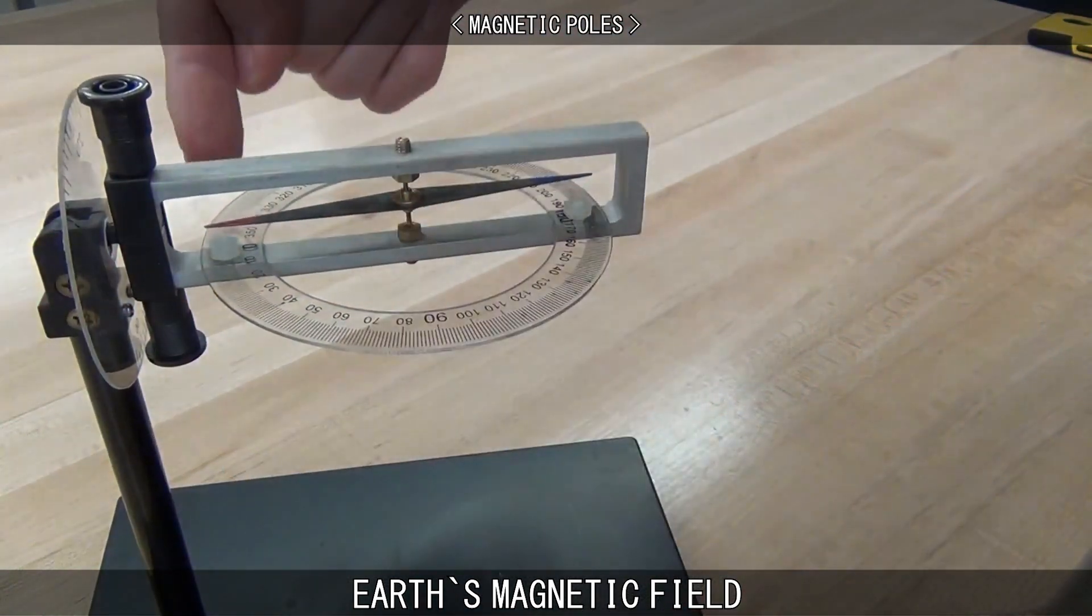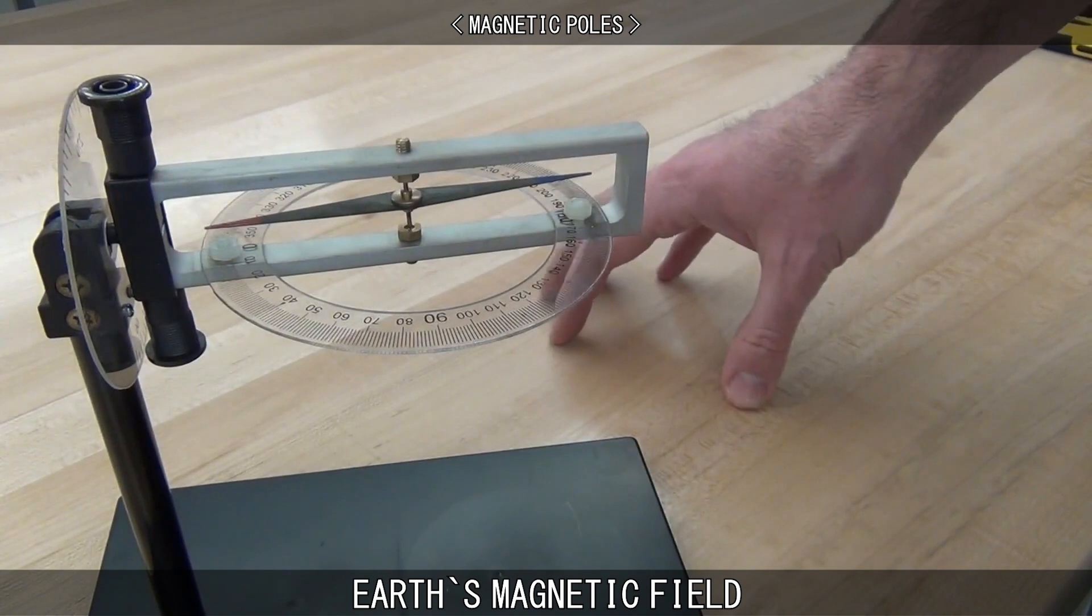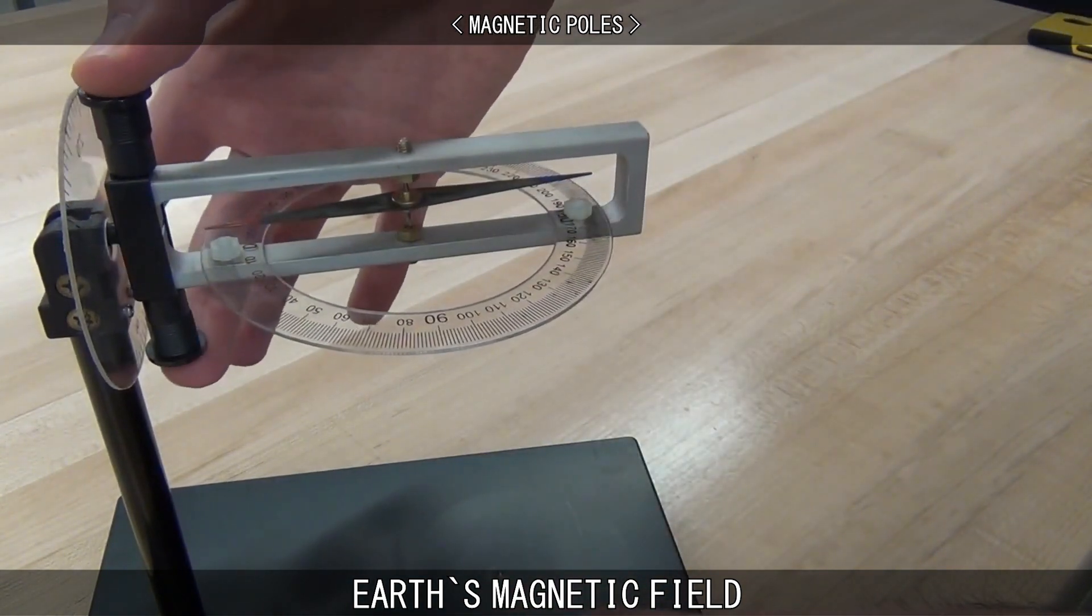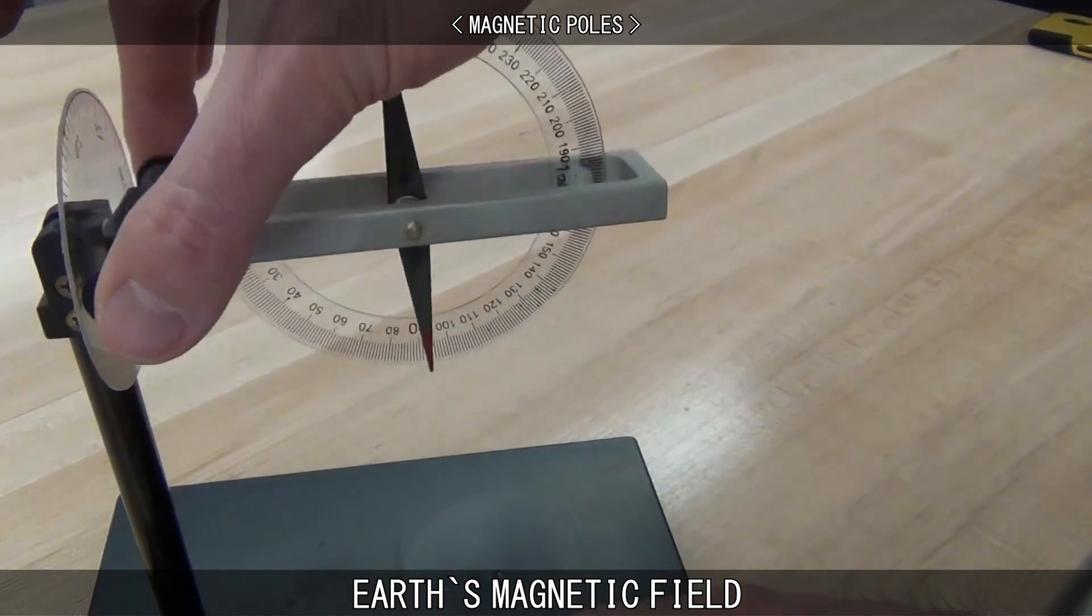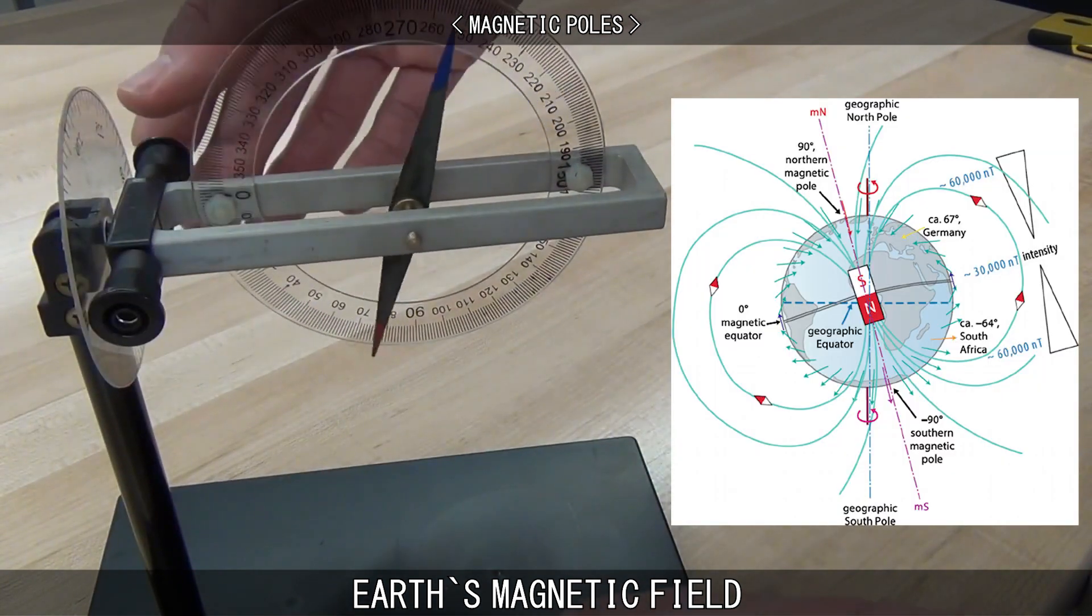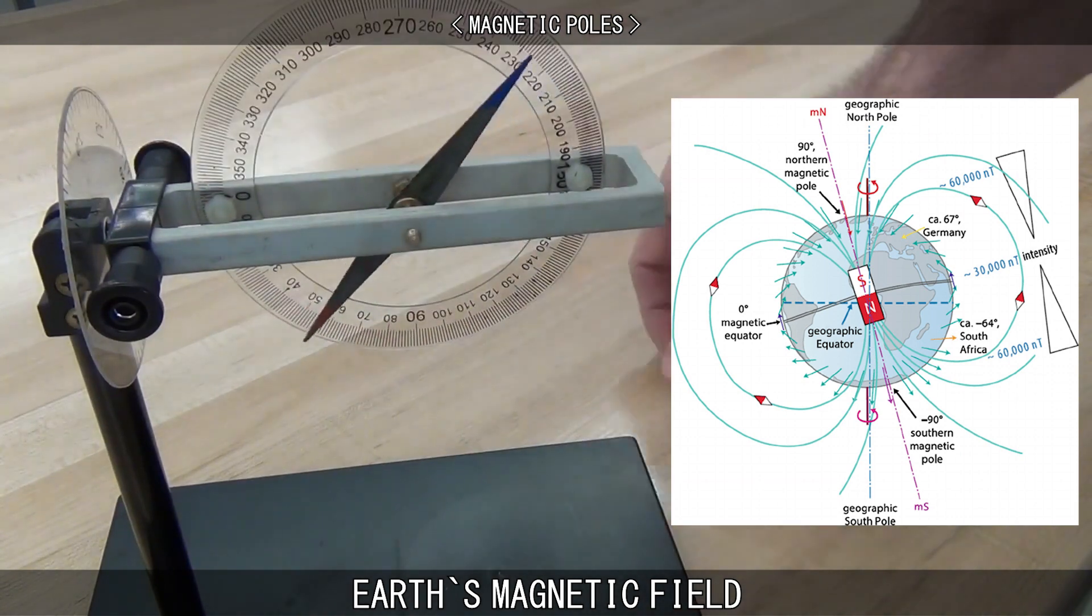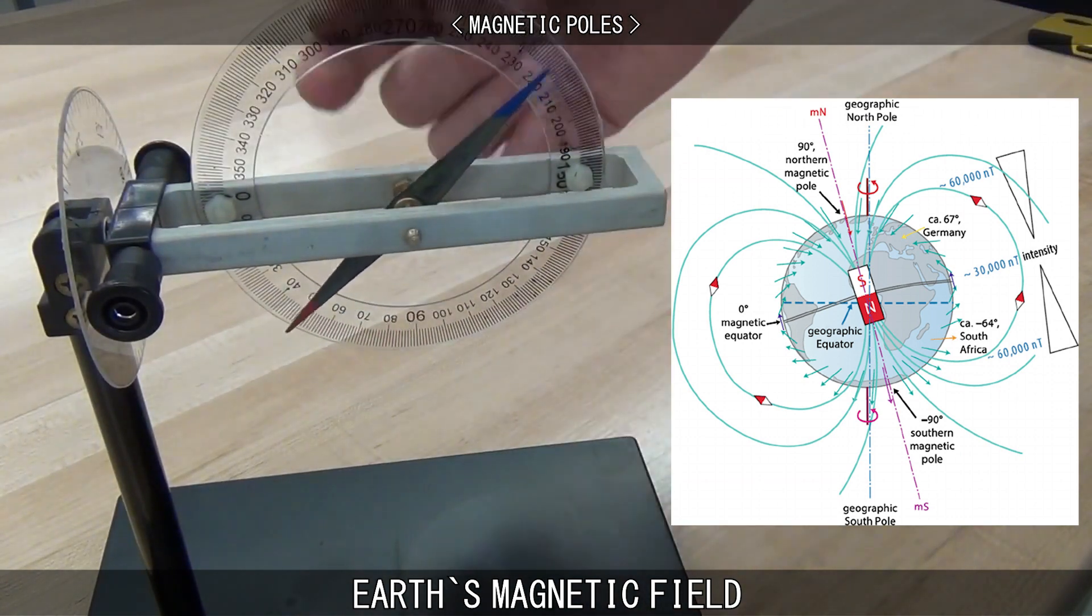To find the north and south magnetic poles, a dip compass is used. While a regular compass acts on a horizontal plane, a dip compass can move on a vertical plane. A vertical dip of negative 90 degrees indicates the north magnetic pole, and a dip of positive 90 degrees indicates the south magnetic pole.